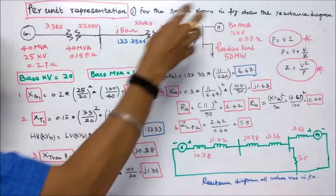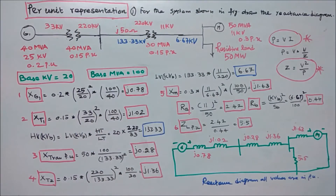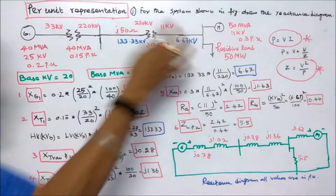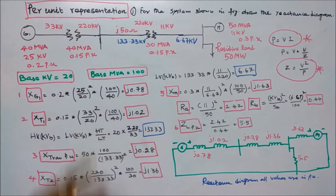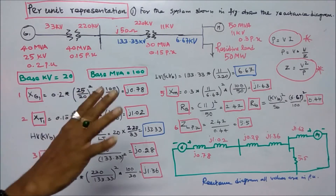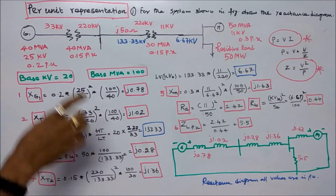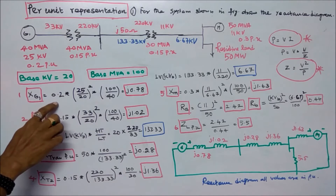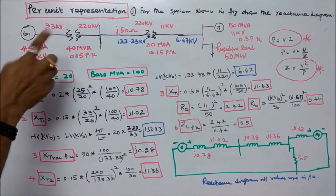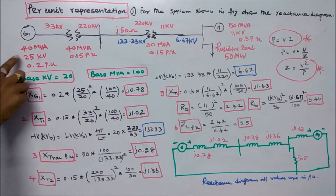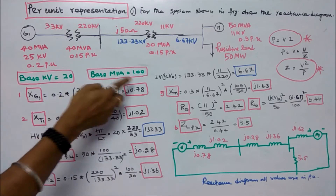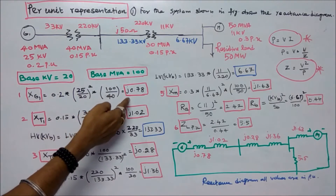Step one: find the per-unit reactance of the generator. Per-unit reactance equals actual reactance 0.2 multiplied by (Vb1/Vb2)² × (Sb2/Sb1) = (25/20)² × (100/40), which equals j0.78.